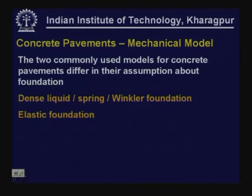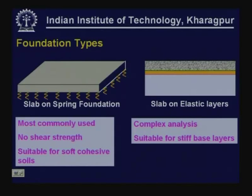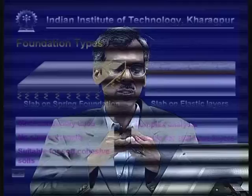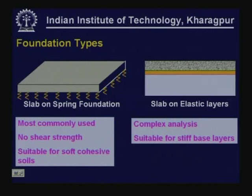On the left-hand side you have a slab placed on a spring foundation, Winkler foundation, or dense liquid foundation — this is the most commonly used foundation type for analysis of concrete pavements. It assumes no shear strength for the foundation and these are usually suitable for soft cohesive soils. On the right-hand side, the foundation considered is an elastic layer — a combination of elastic layers, with a slab placed on a number of elastic layers. This analysis is slightly more complex but is usually suitable for concrete pavements with stiff base or stiff foundation.